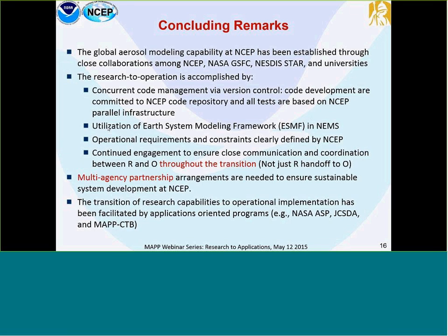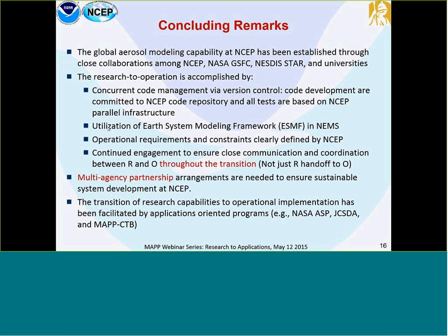It's really not just R to O. We continue to engage between both sides to ensure very close communication and coordination between R and O throughout the whole transition process. The university, agencies, and EMC work closely throughout the whole process for a smooth transition to NEMS for operational application. Looking forward, multi-agency partnership is very important to ensure sustainable system development. The transition of research capability from NASA to NOAA for operational implementation has been facilitated by several application-oriented programs: NASA Applied Science, the Joint Center, and the MAP Climate Testbed.